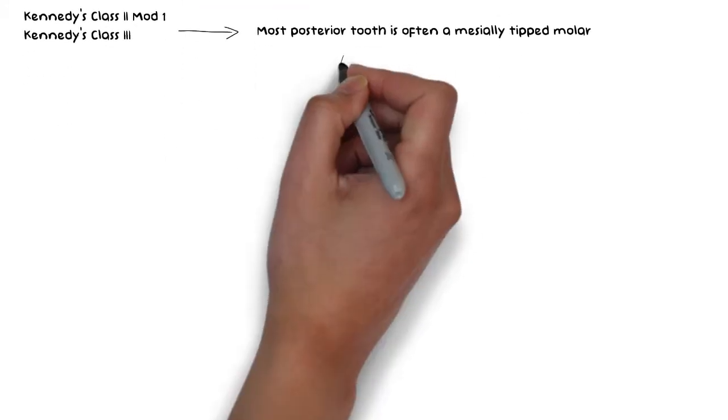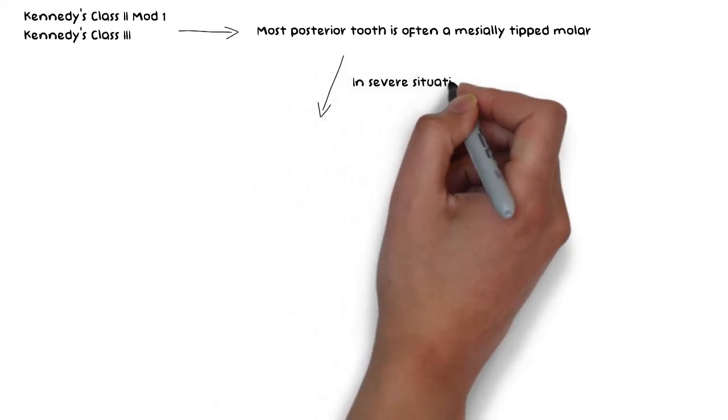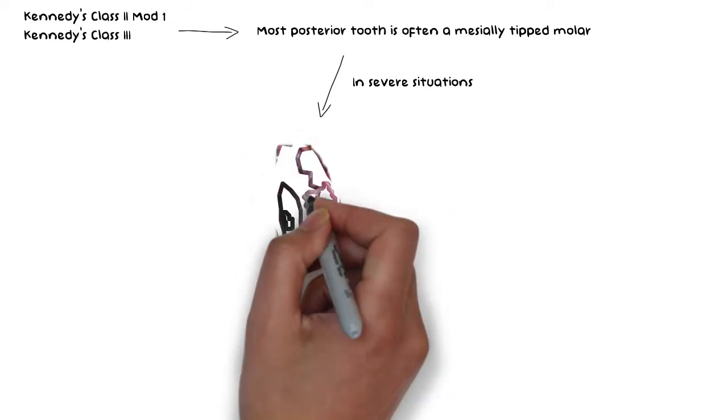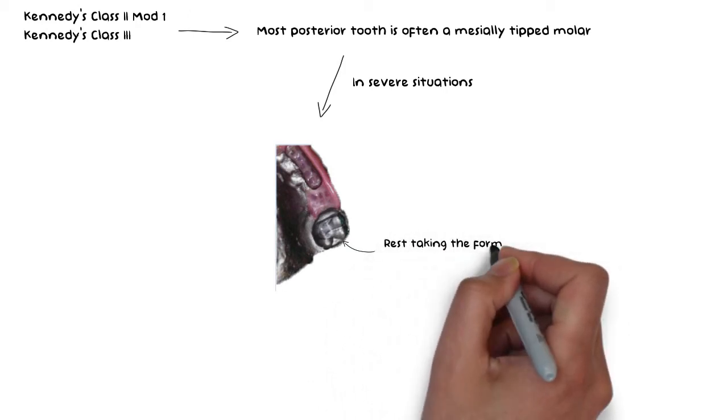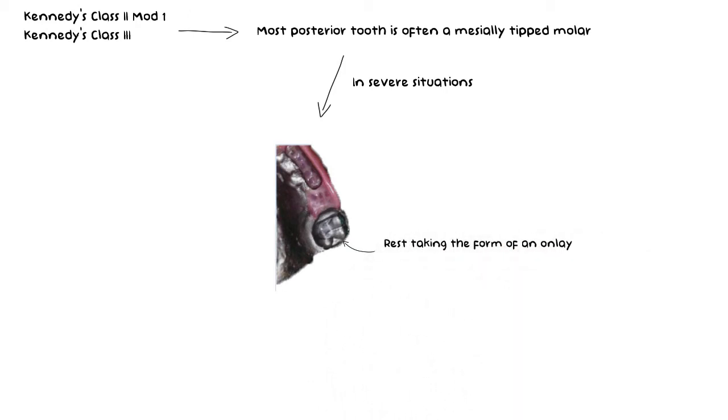In severe situations where the abutment may be severely tilted, the occlusal rest may take the form of an onlay in order to restore the occlusal plane. In this case, the occlusal rest will cover the entire crown and so it must also restore the occlusal anatomy of the crown.